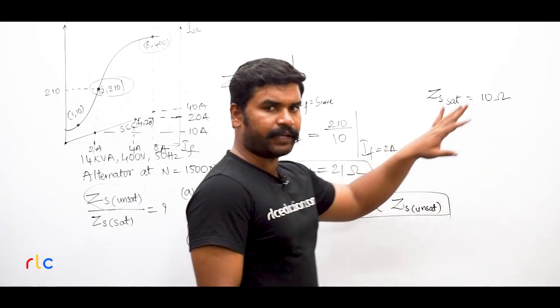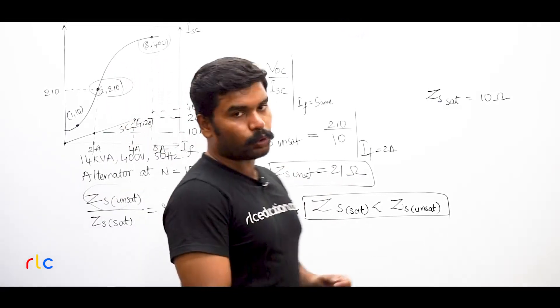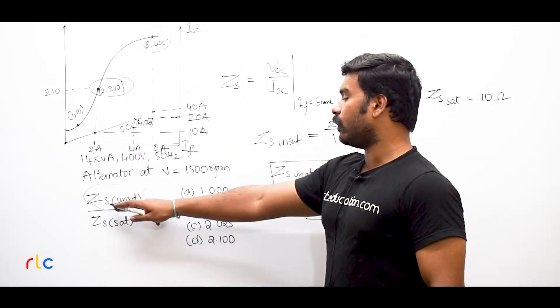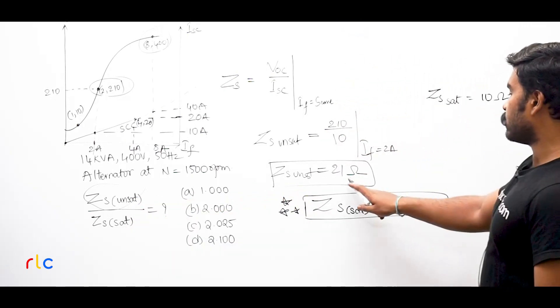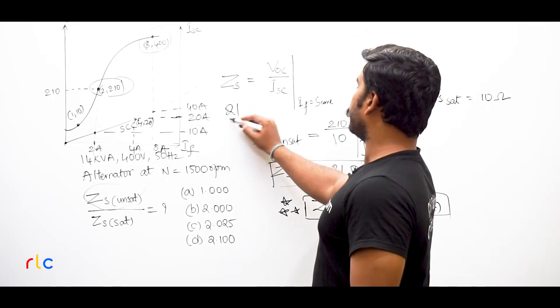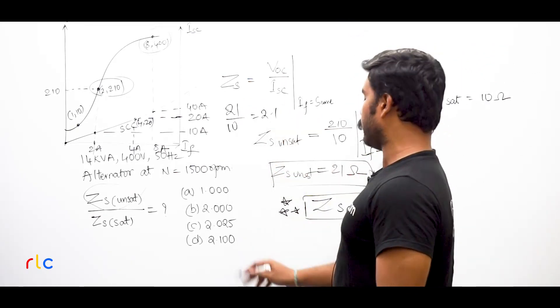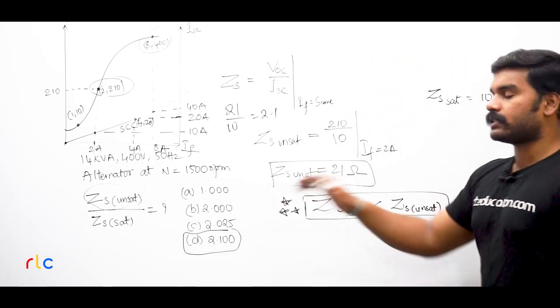So whereas here you got saturated impedance as 10, unsaturated impedance was higher, that is 21 Ohms. Now you are asking the ratio of unsaturated impedance by saturated impedance. Unsaturated impedance how much? 21. Saturated impedance? 10. 21 by 10 directly 2.1, option D 2.100. This is the answer for this question. Simple, thank you for watching.